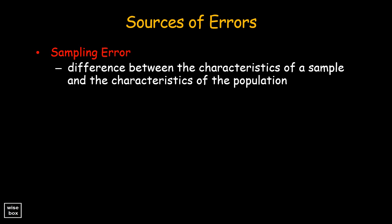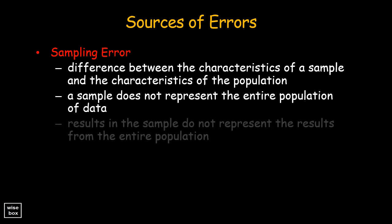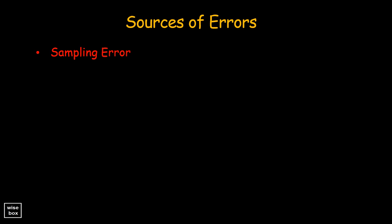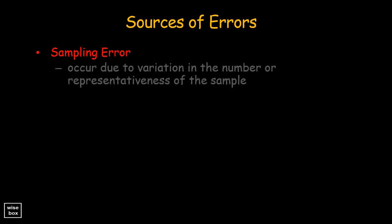This occurs when an analyst selected a sample that does not represent the entire population of data, and the results found in the sample do not represent the results that would be obtained from the entire population. These errors may also occur because of variation in the number or representativeness of the sample that responds.